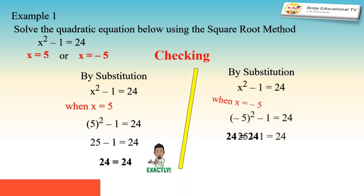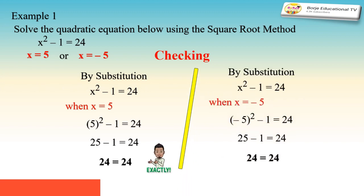We apply the same procedure with the second value, x = -5. Substituting into every occurrence of x gives us (-5)² - 1 = 24. Simplifying, 25 - 1 = 24, meaning 24 = 24. Therefore, negative 5 is also a solution of the equation x² - 1 = 24.